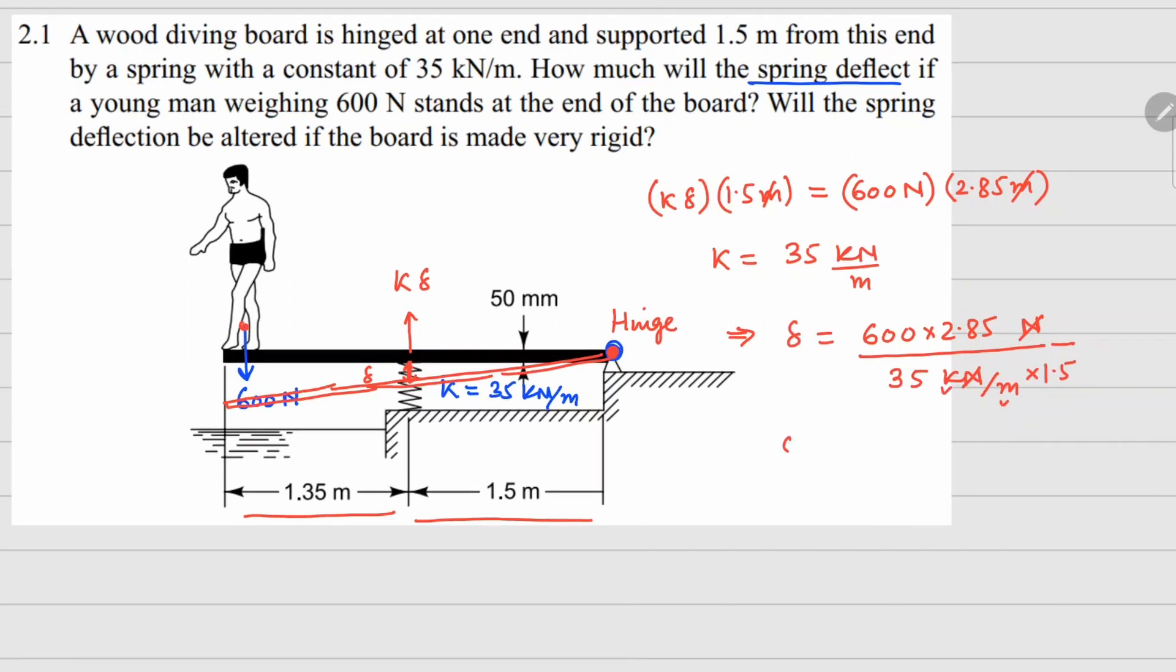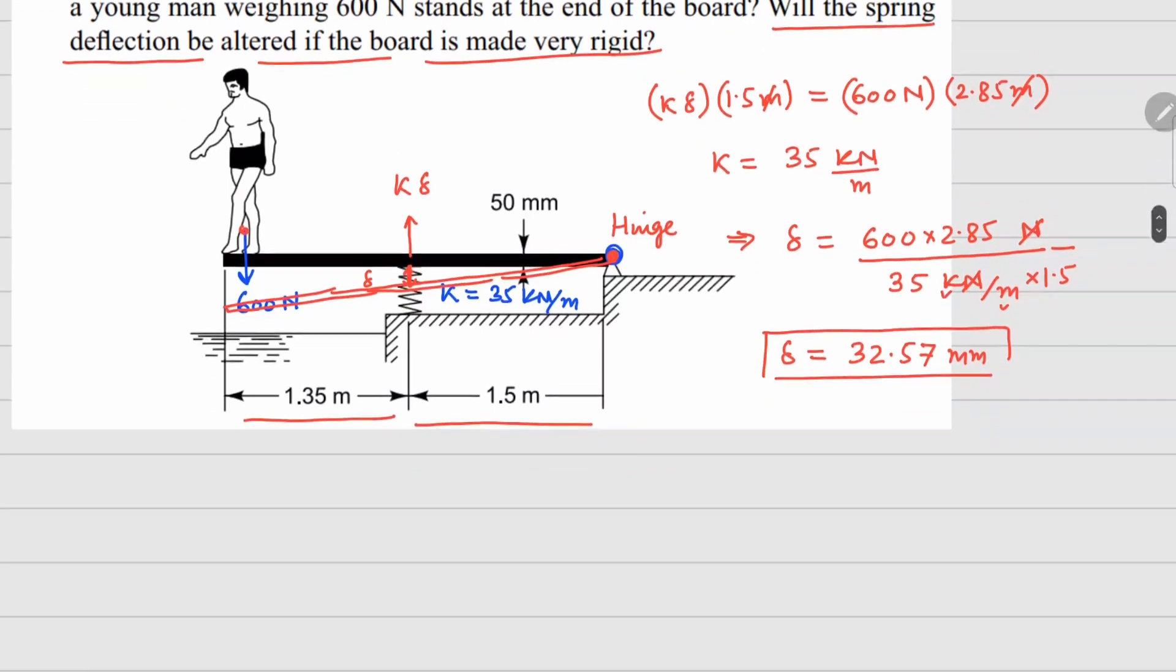So now if you solve this, this comes out to be 32.57 millimeters. In the second part of this question it is saying will the spring deflection be altered if the board is made very rigid, so basically we have to compare two cases.